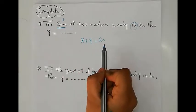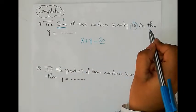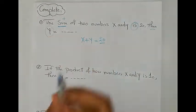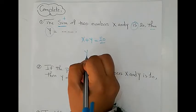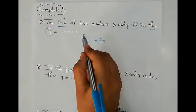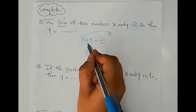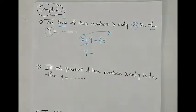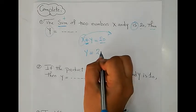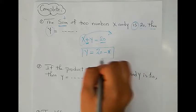Here we have two variables and one constant, which is 20. We need to find the value of Y, so we isolate Y on one side. Since X is on the left side with a plus sign, we move X to the other side using the inverse operation, which is minus. So Y equals 20 minus X.